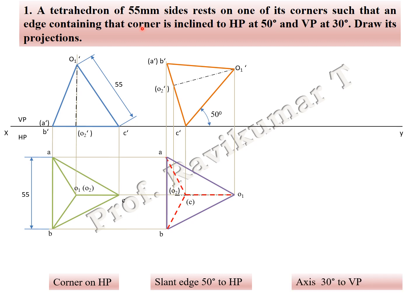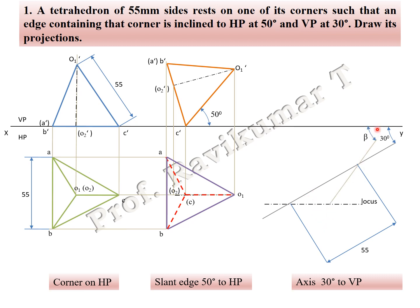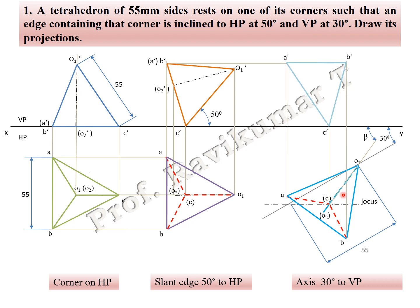We have to find out the beta angle. First take 30 degrees with VP, then use the true length — C2O1 is the true length of 55 mm. Draw the locus line; the apparent length is C2O1. From this apparent length, cut an arc on the locus line, then extend up to the XY line. Place C2O1 on this beta angle. The naming will be copied the same. Extend the projection upward. If looking from the bottom of the object, all other edges are visible; only A2O is invisible because this edge is away from the observer. That A2O1 is represented as a red invisible edge. This completes the tetrahedron locus problem.